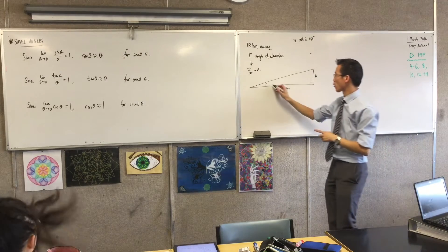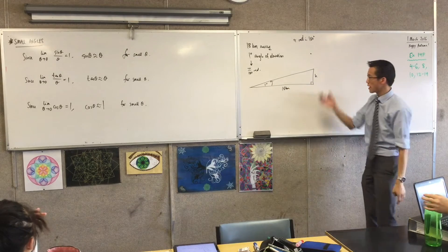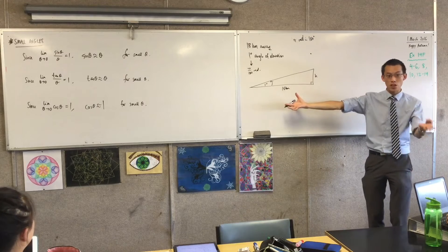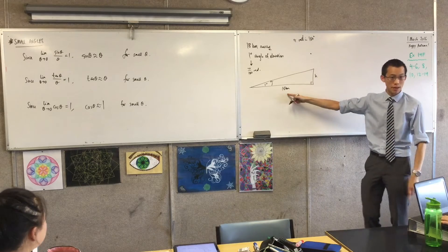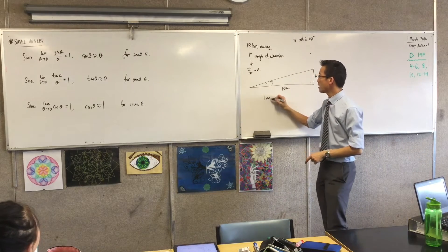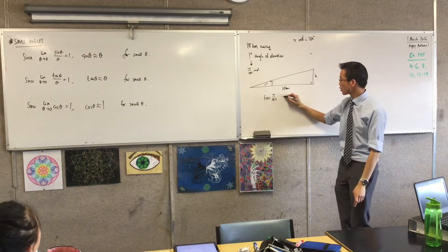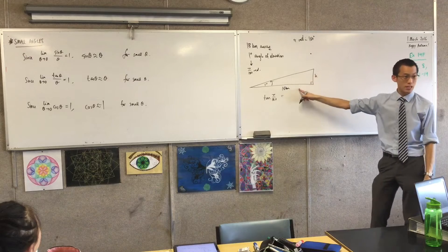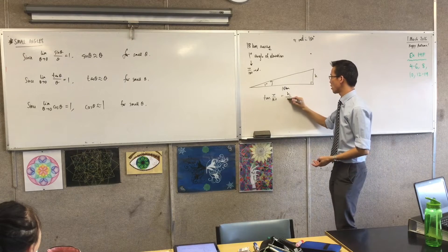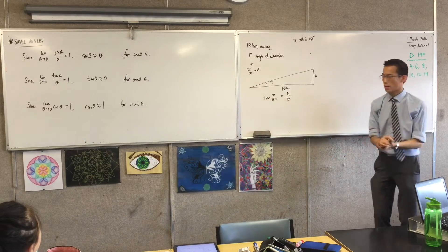Now, have a look at this triangle. There's a simple connection between h and this distance that we know. This is the unknown, this is the known. It's tan. Tan of this angle, that's pi on 180 radians, should be opposite on adjacent. Do you agree with that? H on 18 kilometers.